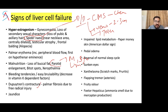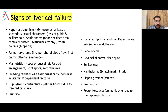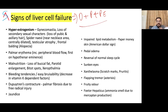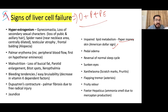Confirmatory signs of liver cell failure are three important signs: Dupuytren's contracture, parotid swelling, and palmar erythema. Other findings include paper money skin (American dollar sign), pedal edema, reversal of normal sleep cycle, xanthelasma. If the brain is involved, there may be flapping tremor, ammonia smell due to mercaptan production, and loss of appetite due to sinusoidal resistance increase leading to portal hypertension affecting mesenteric veins.